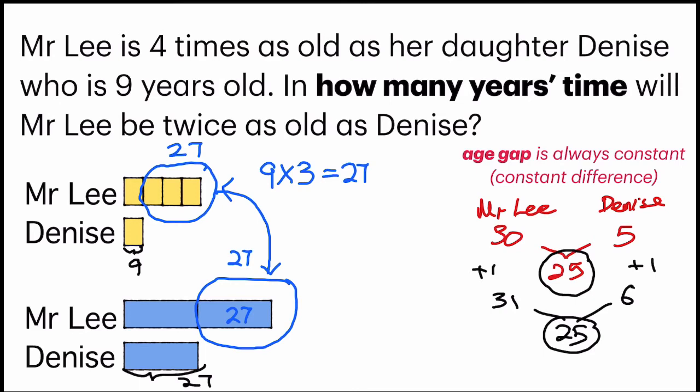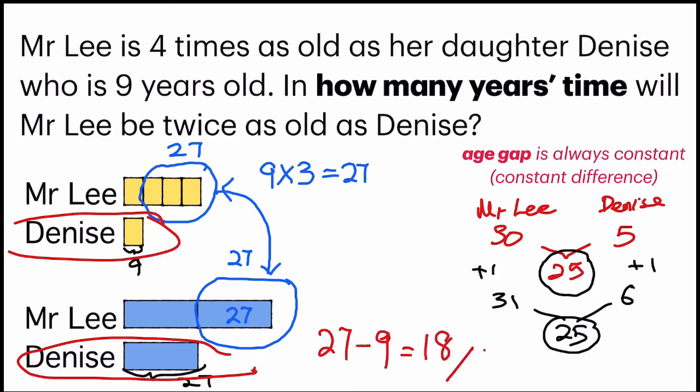So in how many years' time will Mr. Lee be twice as old? We will look at Dennis' age. Dennis was 9, and now she's 27. So 27 minus 9, it will give me 18. So the answer is 18.